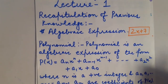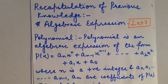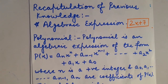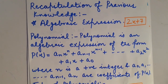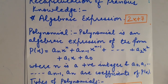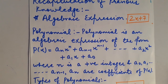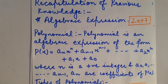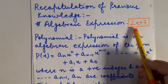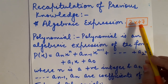What do you mean by Algebraic Expression? Algebraic Expression is that expression in which variables and constants are connected to each other with different mathematical operations like addition, subtraction, multiplication and division. Here, this is one example of Algebraic Expression: 2x plus 7.